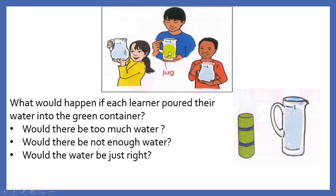Now these are some students and they are each holding a 1 liter jug. What would happen if each learner poured their water into the green container? You can see the green container is very small in size, so it has less holding capacity. That means it will contain less water.